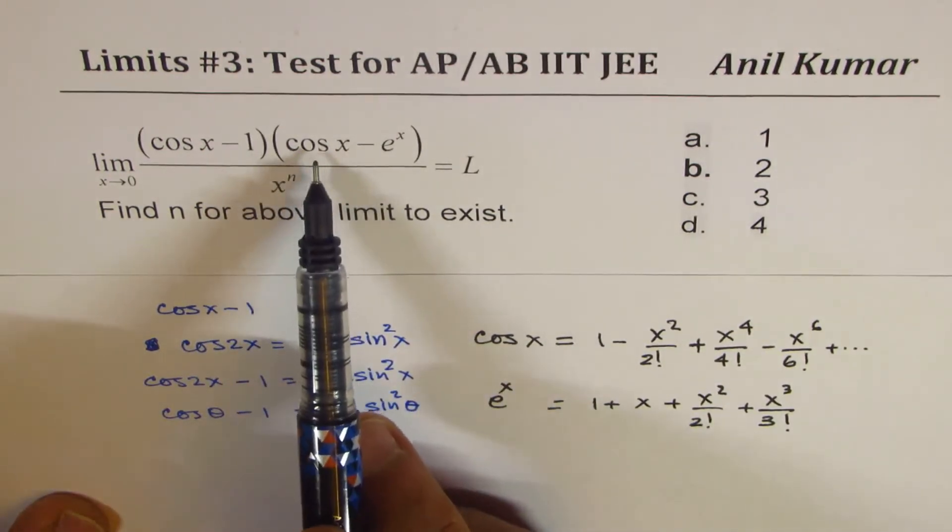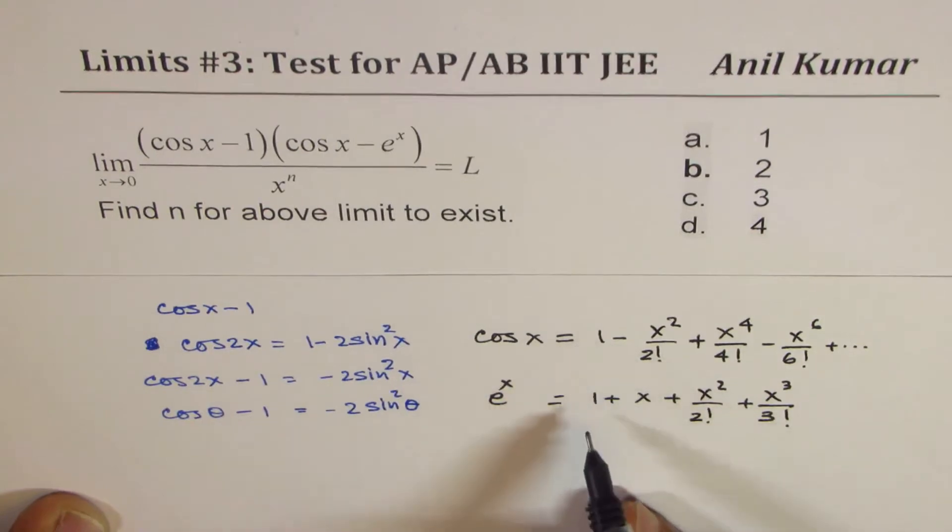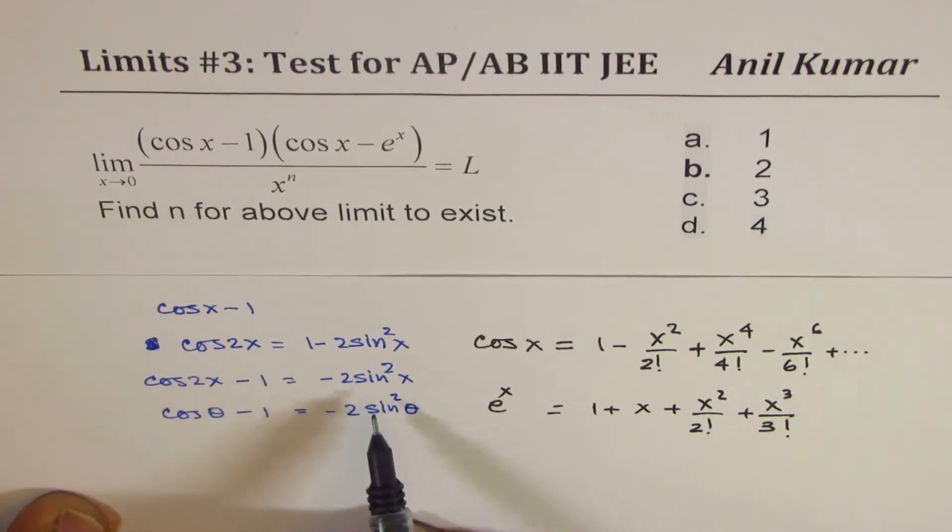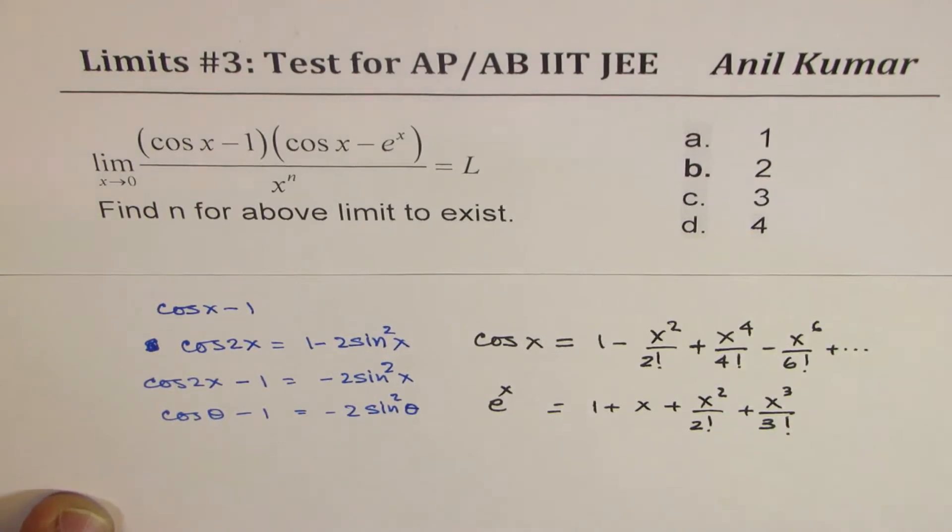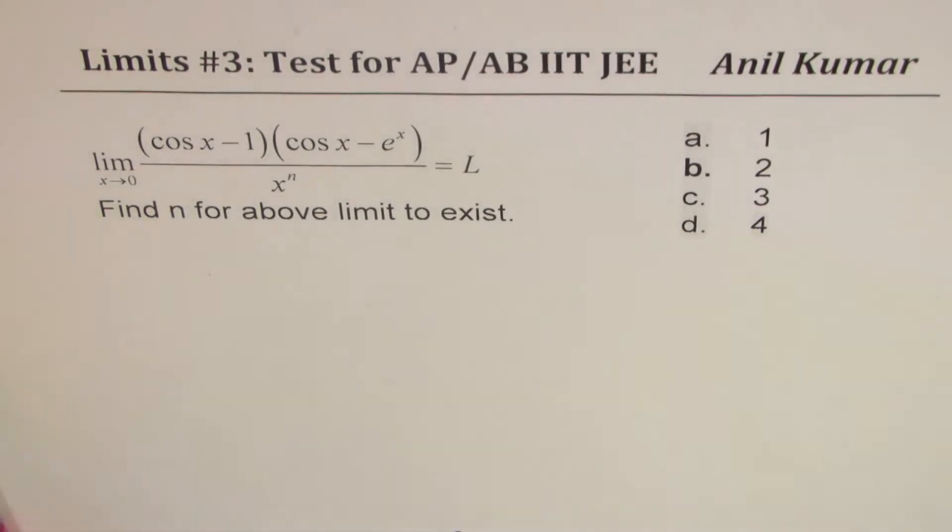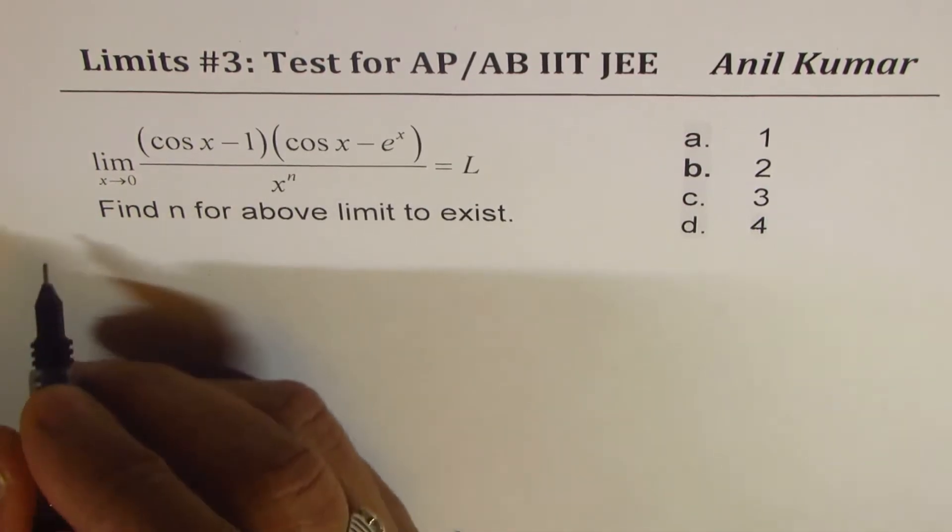These are the expressions which can replace cos x and e^x. As you can see, when we take away one from the other, one and one will cancel. We get all the terms in x and we can factor this out, cancel one x, and sin²θ/θ² is 1. We'll use those strategies to find the possible value of n. You can pause the video, answer the question, and then look into my suggestions.